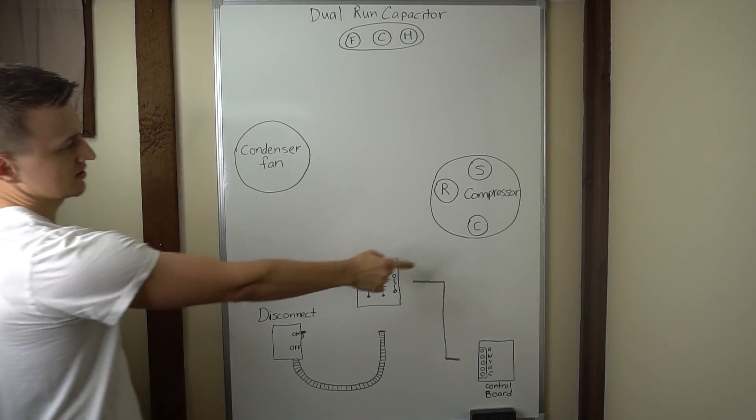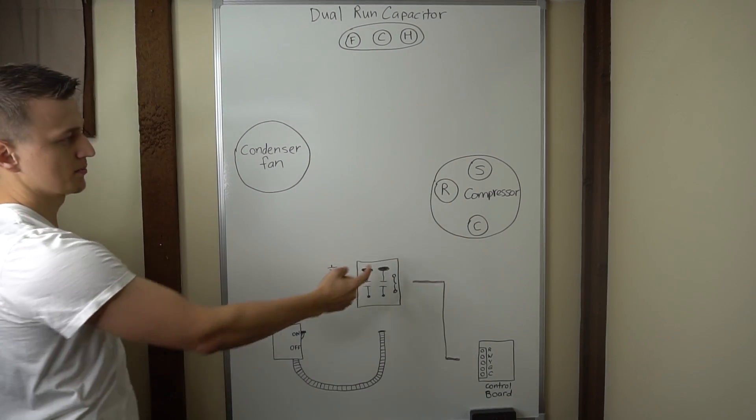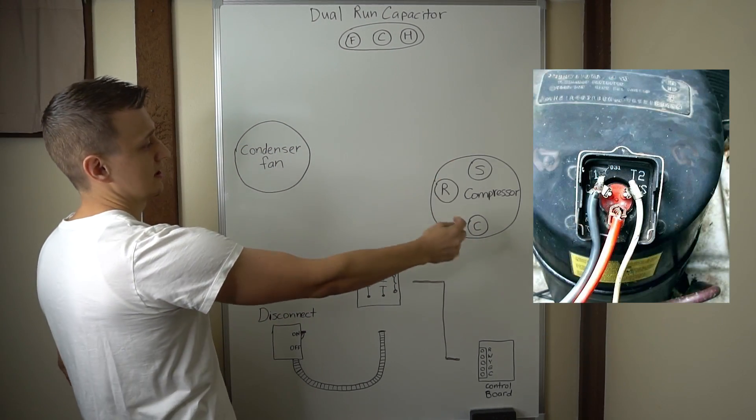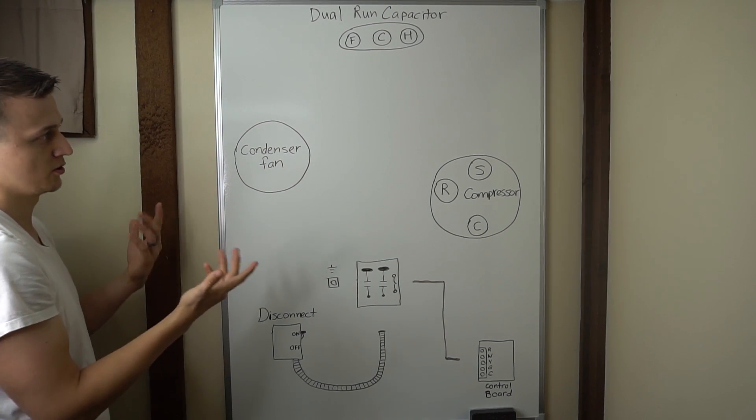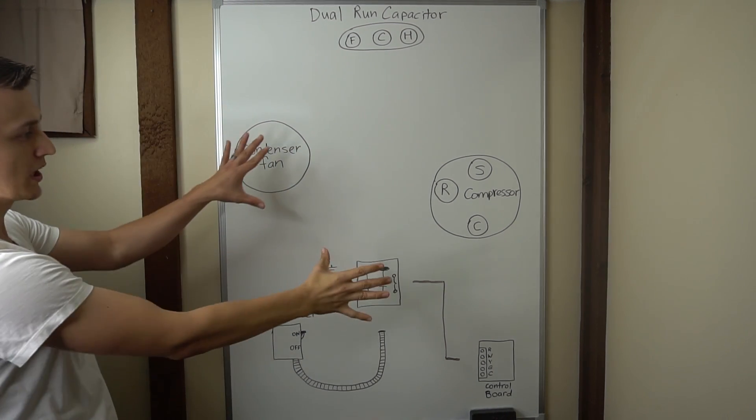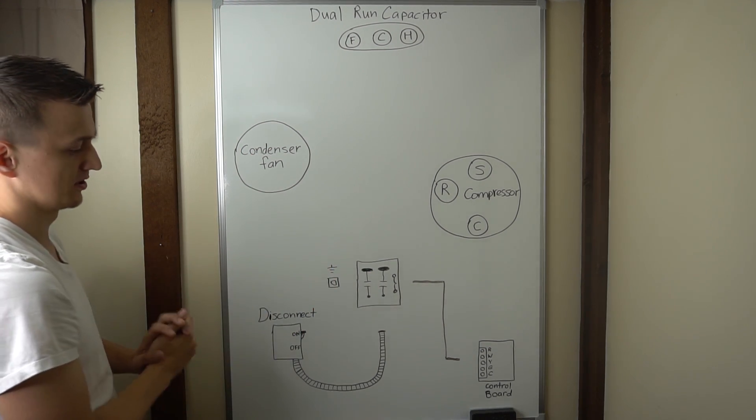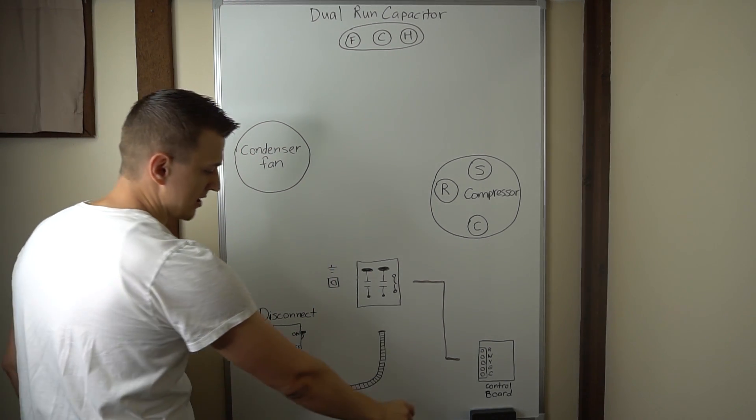The condenser fan motor doesn't have a CRS because on the compressor there's actually the pins that are labeled. The condenser fan motor usually just has three wires sticking out of it and you hook up those three wires. So we got all our components, but no wires. Let's go ahead and add all our wires in.